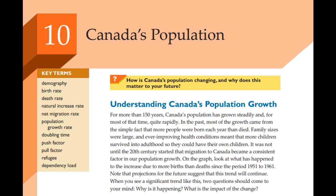There's another really important part of population change: the dependency load. It basically refers to the ratio of people who aren't working — usually kids under 15 and seniors over 65 — to the people who are working and contributing to the economy. The chapter uses visuals called population pyramids, which show the breakdown of a population by age and gender. Comparing Canada's past, present, and projected population pyramids is striking — it's like watching a time lapse of Canada's population aging. With birth rates down and people living longer, Canada has a higher percentage of older adults overall.